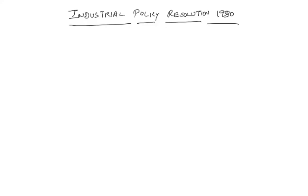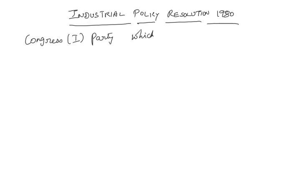Hello and welcome to one and all. In today's class we'll check out the next industrial policy announced by the Congress government — the Industrial Policy Resolution of 1980. The previous one, the IPR of 1977, was introduced by the Janata government but couldn't continue because that government lasted only two years. In 1980, the Congress government came back to power.